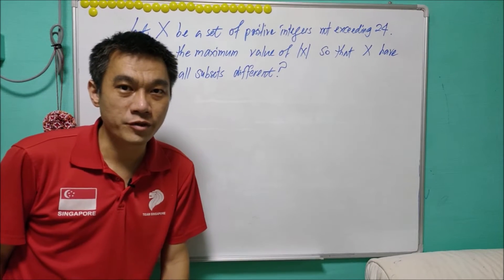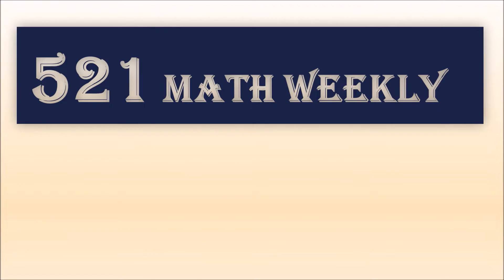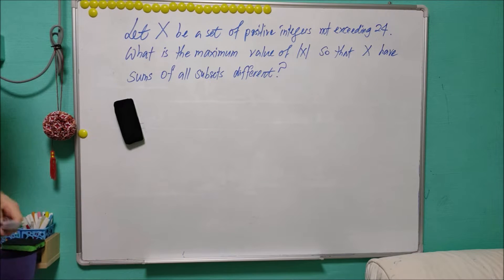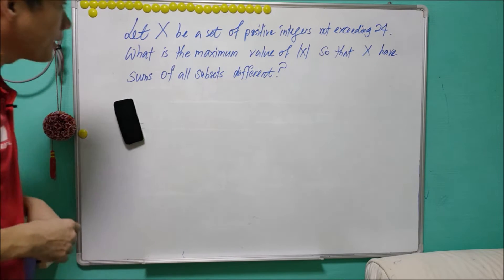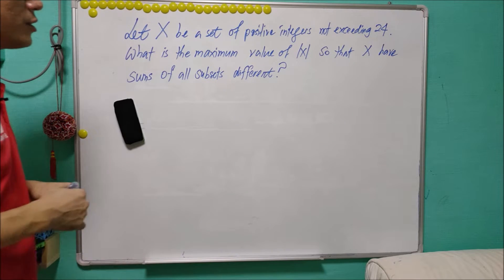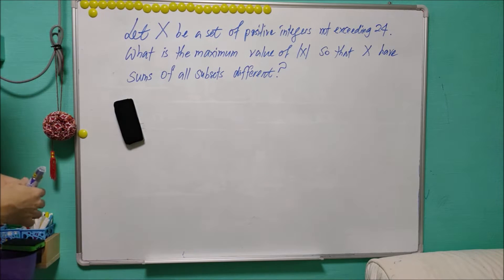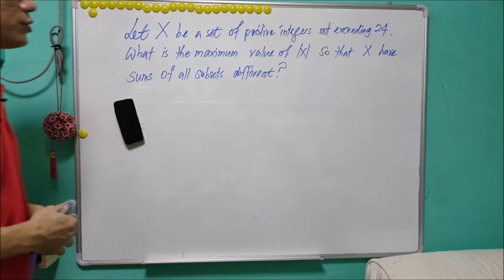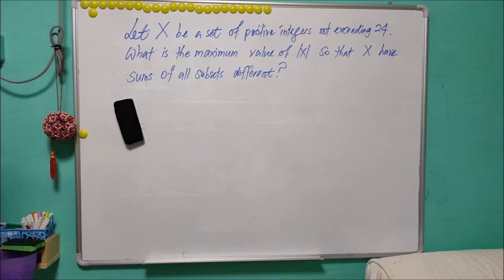Welcome to another math problem of the week. For today's problem, let X be a set of positive integers not exceeding 24. We are asked to find the maximum value of |X| so that X has sum of all subsets different.